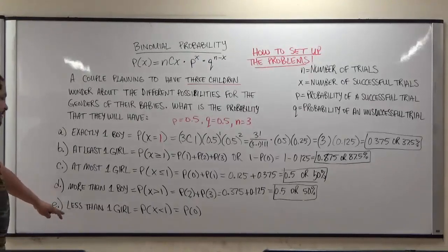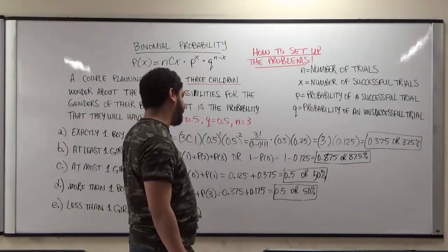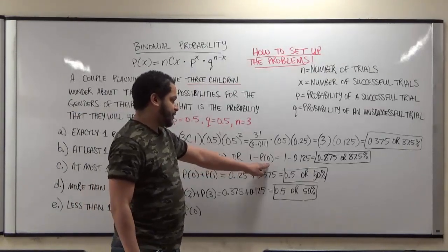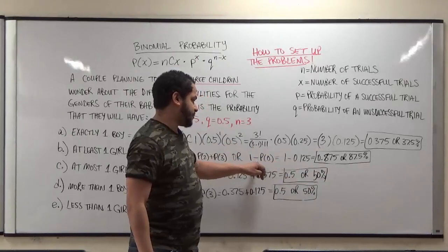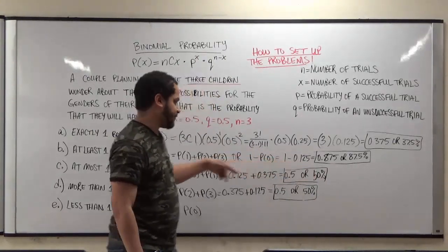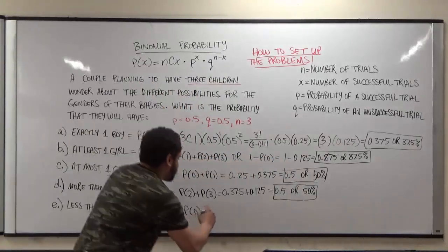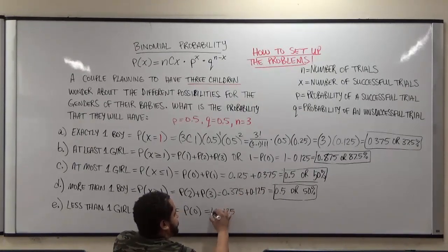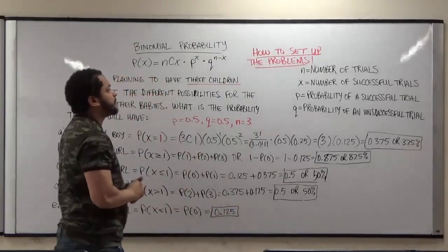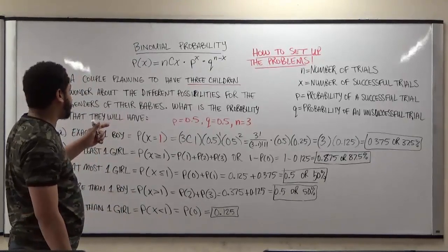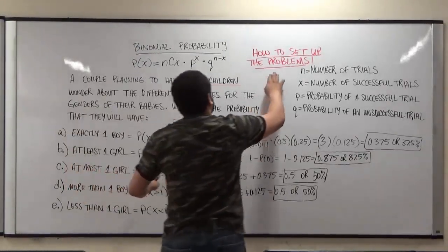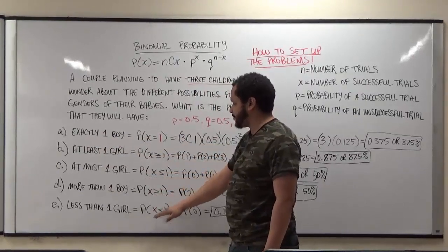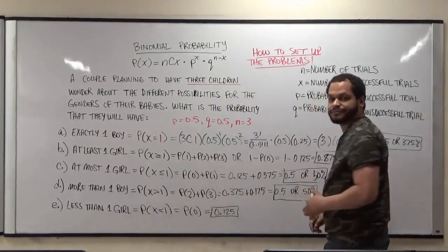For Part E, less than one girl means P(X < 1), which is just P(0 girls) = 0.125, the same value we calculated in Part B. To summarize: when doing binomial probability distributions, make sure the problem meets the four requirements, then translate the word problem into probability functions, and solve from there. Thank you.